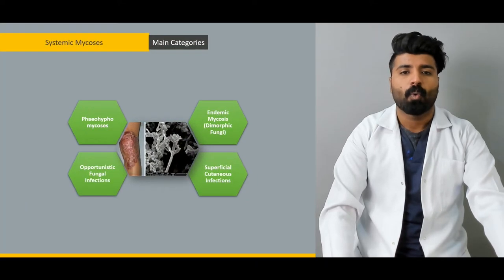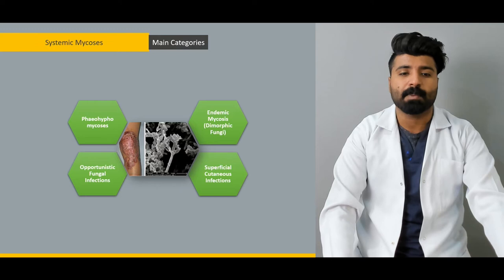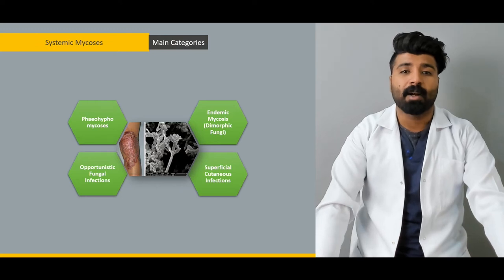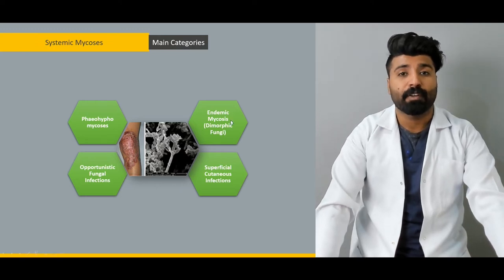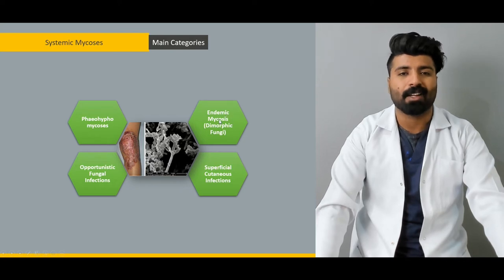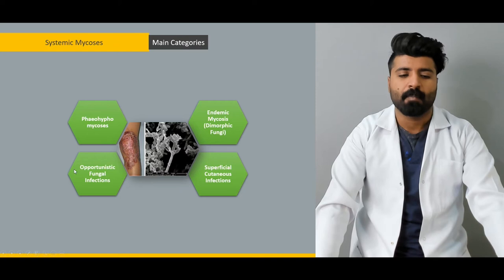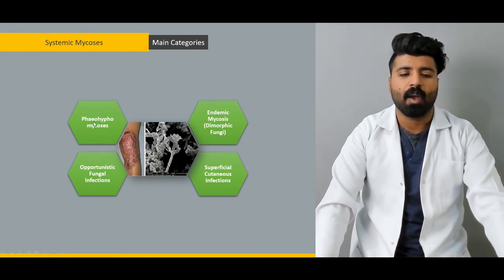First of all, we're going to start with what systemic mycosis is, what are its further subtypes, and among these subtypes we're going to talk about what endemic mycosis is, what superficial cutaneous infections are, what those opportunistic fungi infections are, and what pheohyphomycosis is.